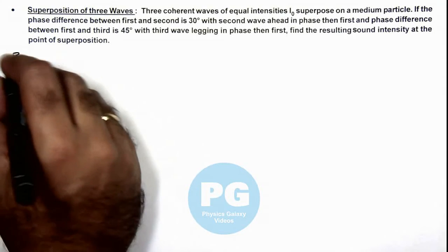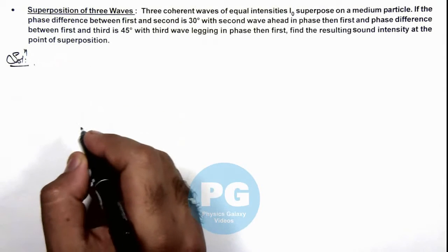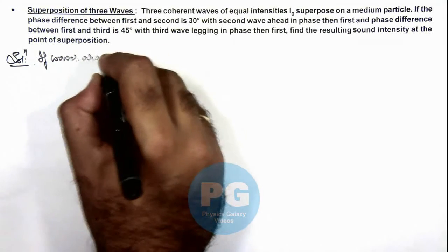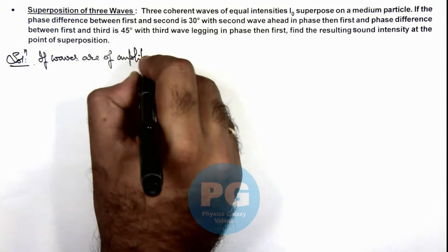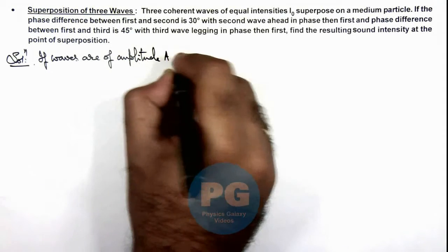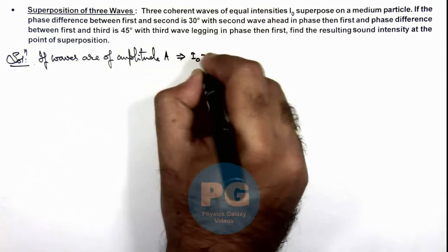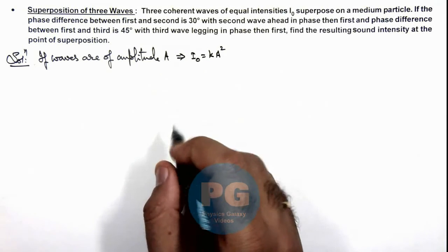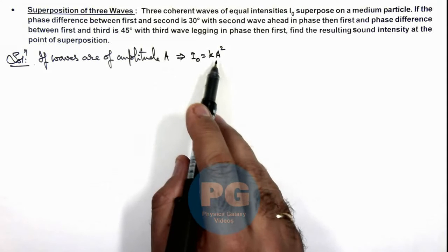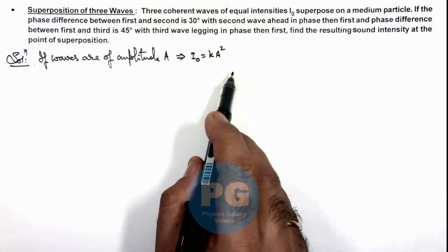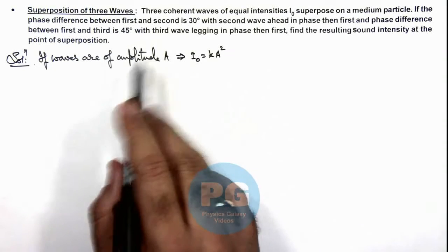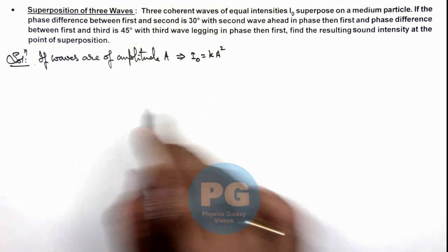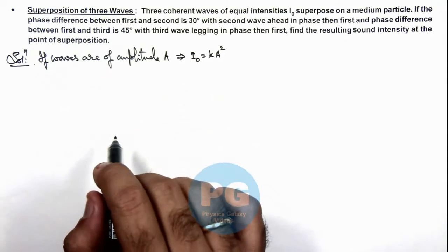Here we can simply analyze the situation. If waves are of amplitude A, this implies we can write intensity I₀ is proportional to square of amplitude. We can assume amplitude of each wave as a vector with their phase difference as the angle between vectors, and find out the resulting vector for the resulting amplitude after superposition of the three waves.